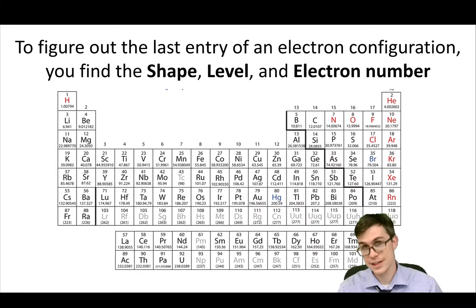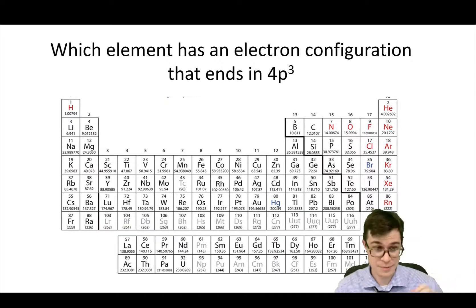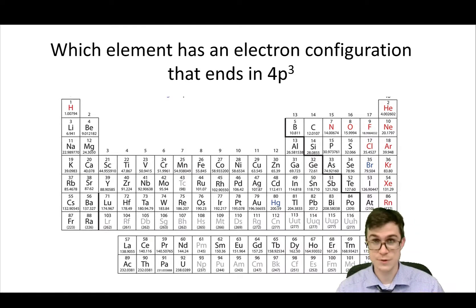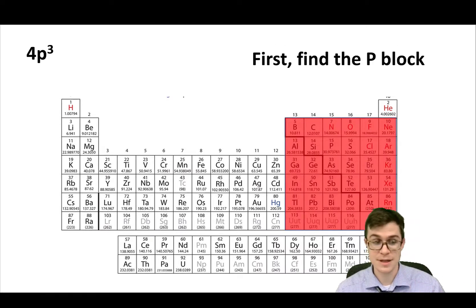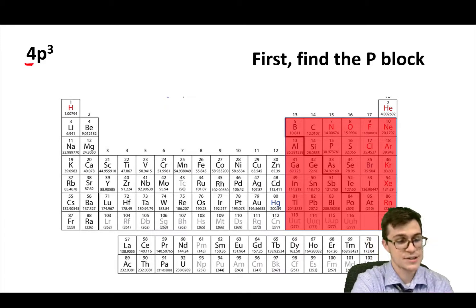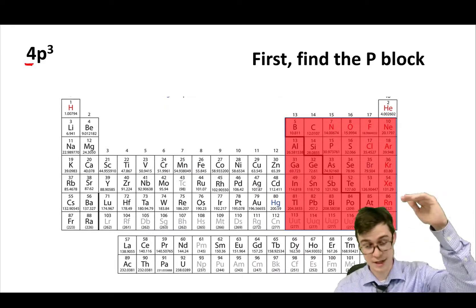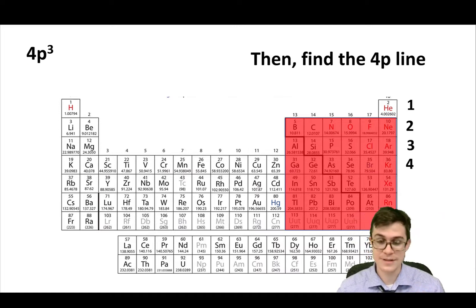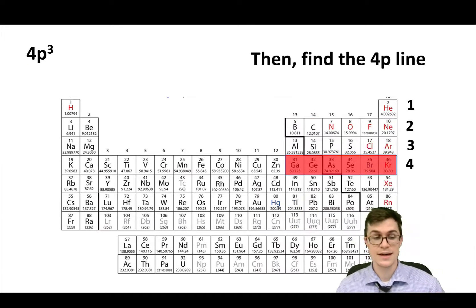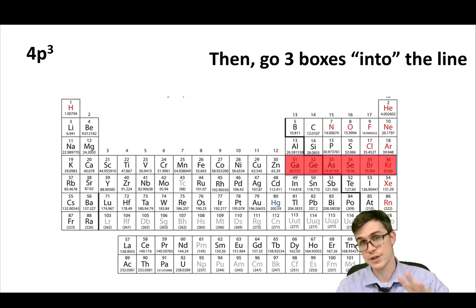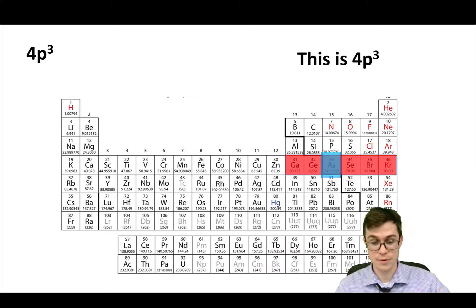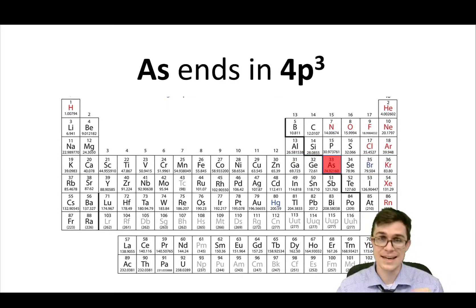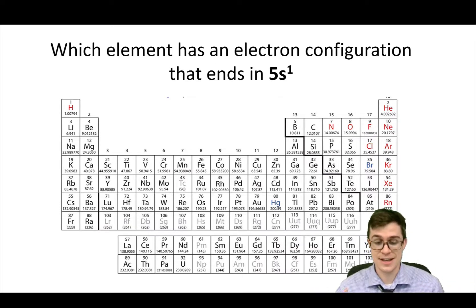To figure out the last entry of an electron configuration, you need the shape, the level, and the electron number. For example: which element has the electron configuration that ends in 4P3? You find the P-block, then look at the energy level — that tells you which row of the table you're in. So 4P is this row, and the little '3' tells you there are three electrons in that block. So you go one, two, three — this is 4P3. It is As, which is arsenic.